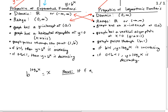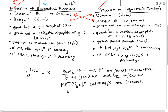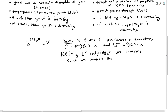Recall that if f and f inverse are inverses of each other, then f composed with f inverse of x gives x back out, and f inverse composed with f of x also gives x back out.